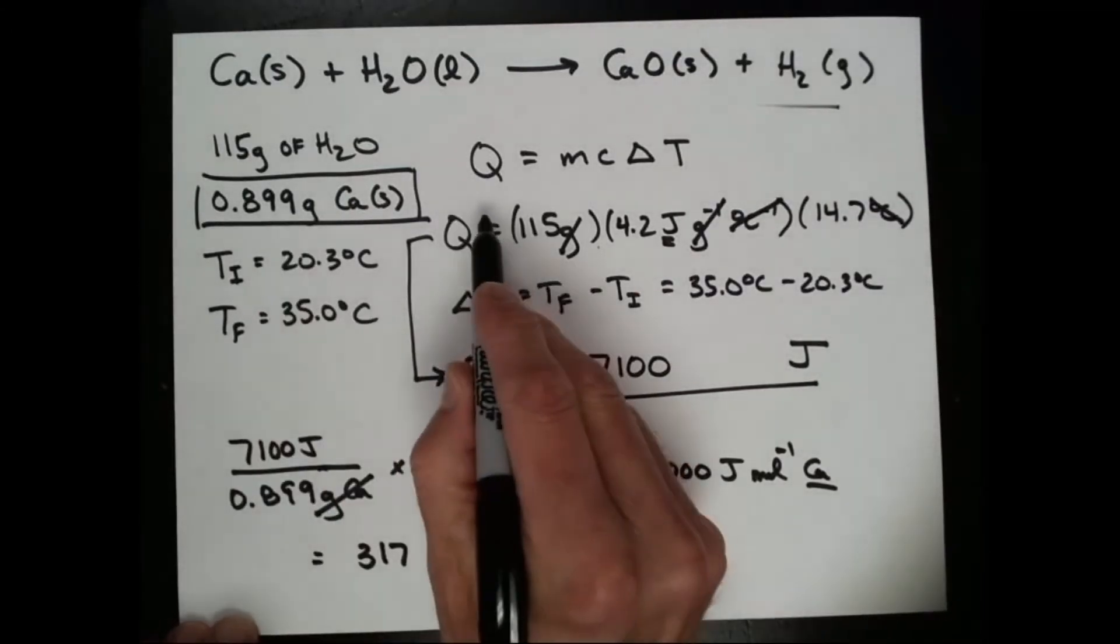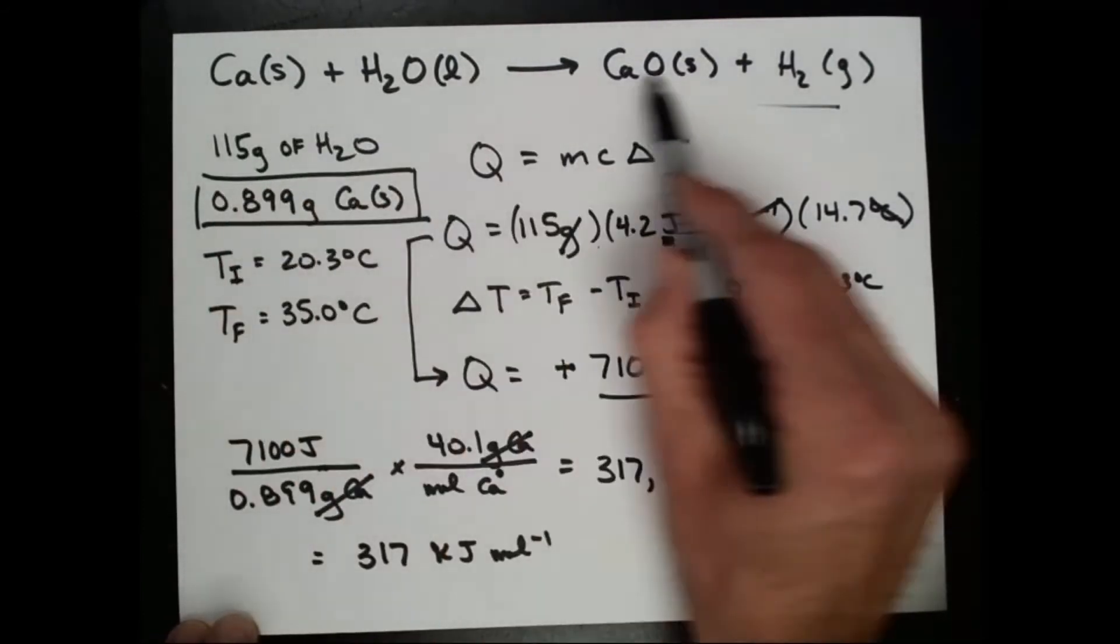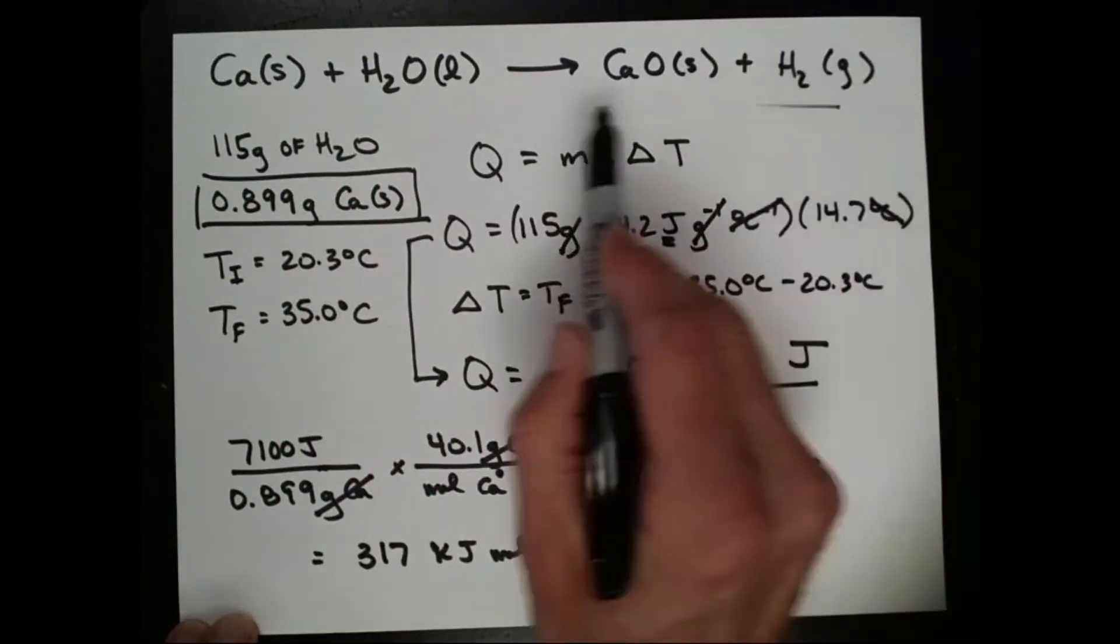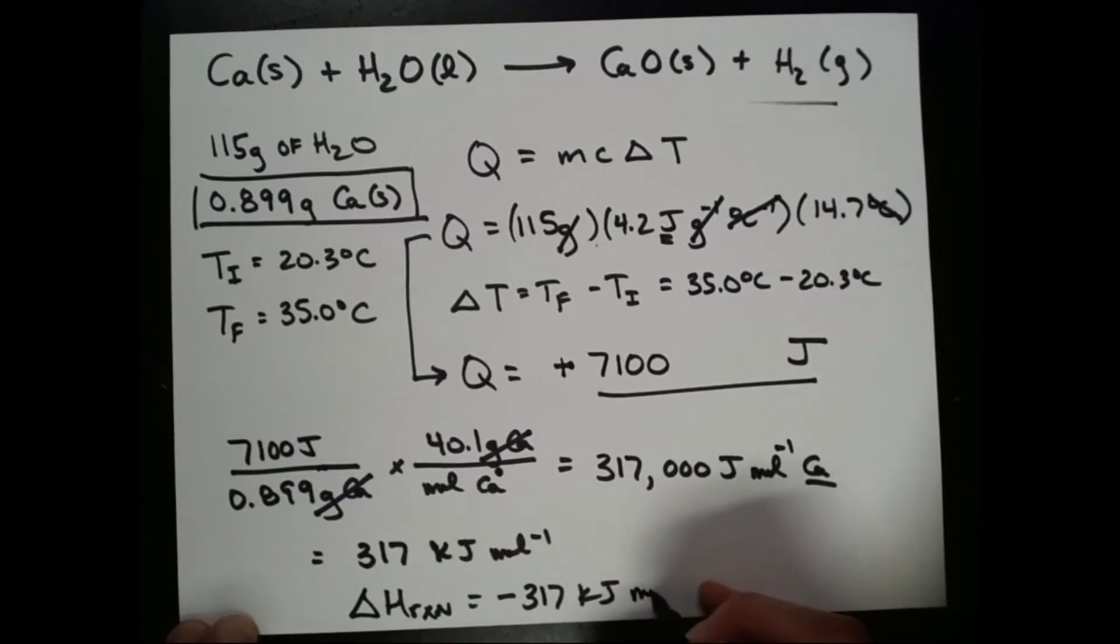Now, because the water increased in temperature, the energy for the water is going to be positive, and that energy came from this reaction. So this reaction released the energy. So if we want the enthalpy change for this particular reaction, it would be, according to our measurements, a negative 317 kilojoules per mole of calcium reacted.